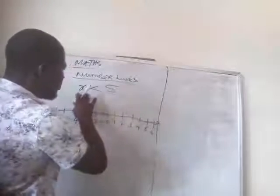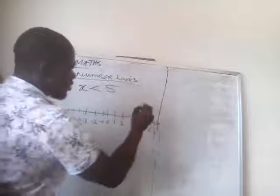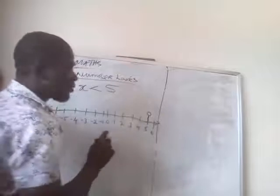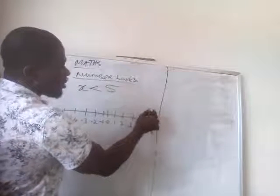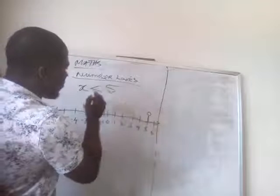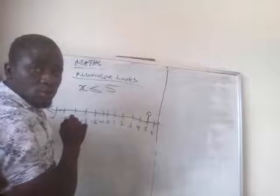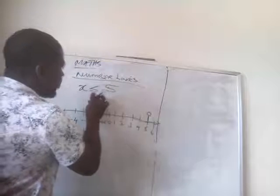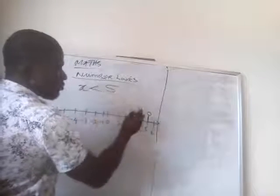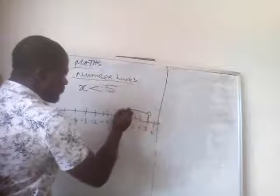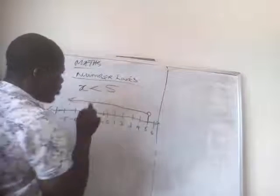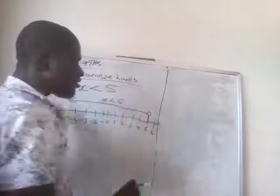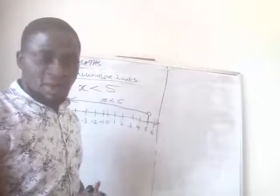So, this statement said X is less than 5. I did not shade this because they did not say it's less than or equal to. If it's equal to, you shade the circle. But if it's only less than, you draw from that 5, continue. With this now, X is less than 5. That's the solution for X is less than 5 using number line.